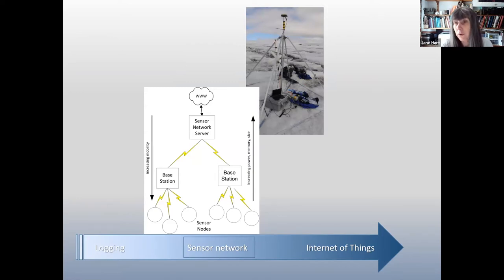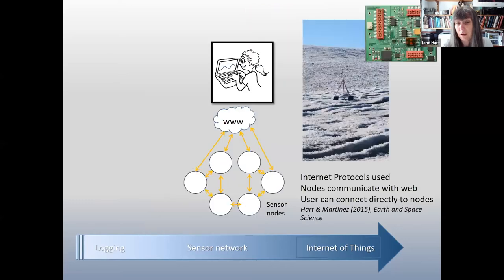And then we move on to the next phase, the phase that I'm going to talk about that we're in now, which is the internet of things. And this is where we have both ways. So we're not only having data coming back from the field, but we're also able to talk to the nodes in the field. And we use internet protocols to talk to these. So basically, the nodes are like web pages and they're connected directly.